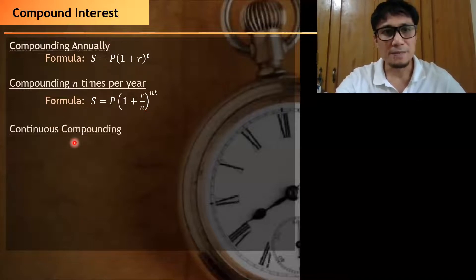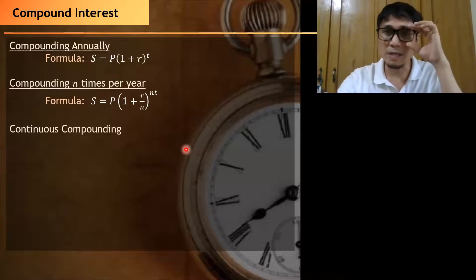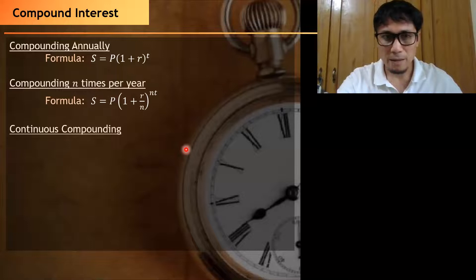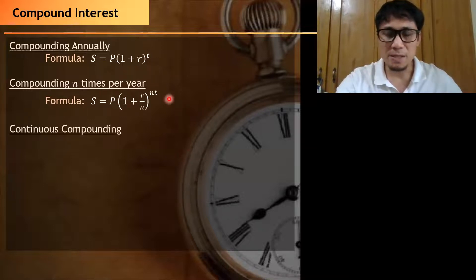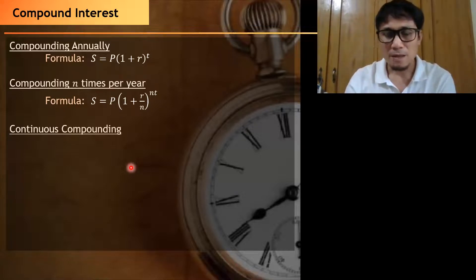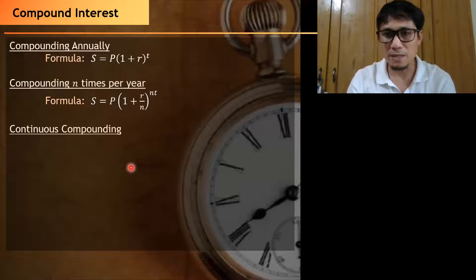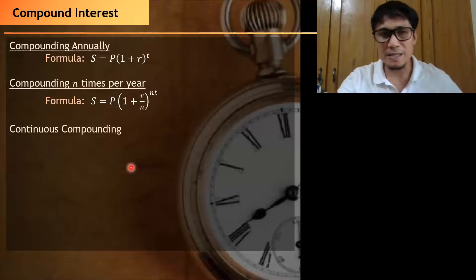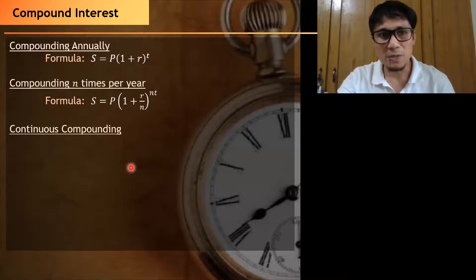The third case is when compounding is done continuously. This is similar to compounding N times per year, but the idea is that the number of compounding intervals is at regular intervals and the number of times compounding approaches a very large number. When that is the case, the total amount when compounding is done continuously approaches the value P times E raised to RT.